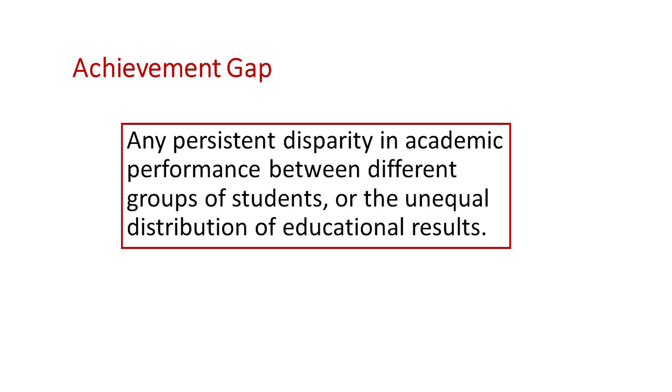Before we get started, we have to define what the achievement gap is. The achievement gap is defined as any persistent disparity in academic performance between different groups of students, or the unequal distribution of educational results. Closing the achievement gap is widely considered to be one of the major challenges facing American public higher education.